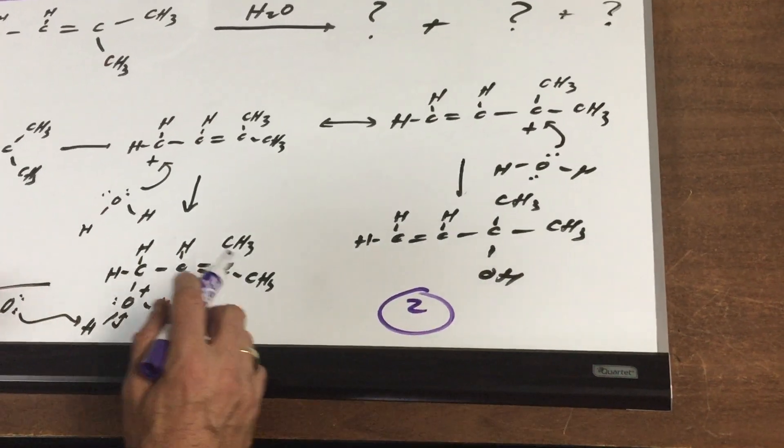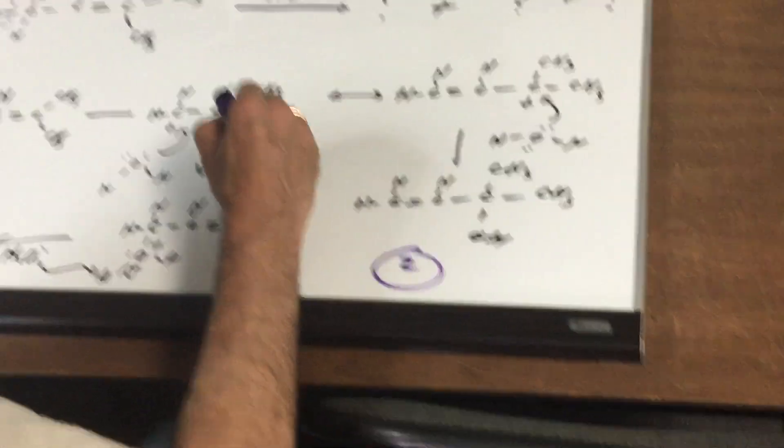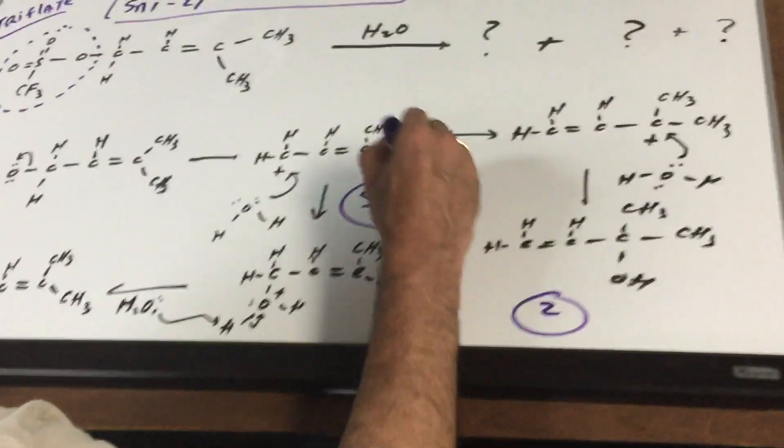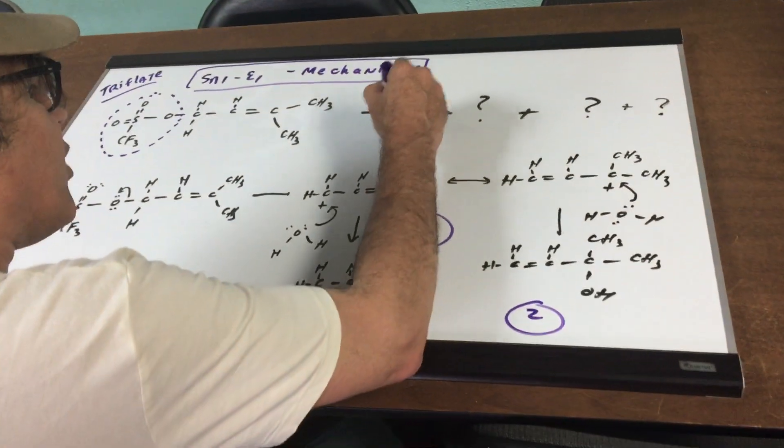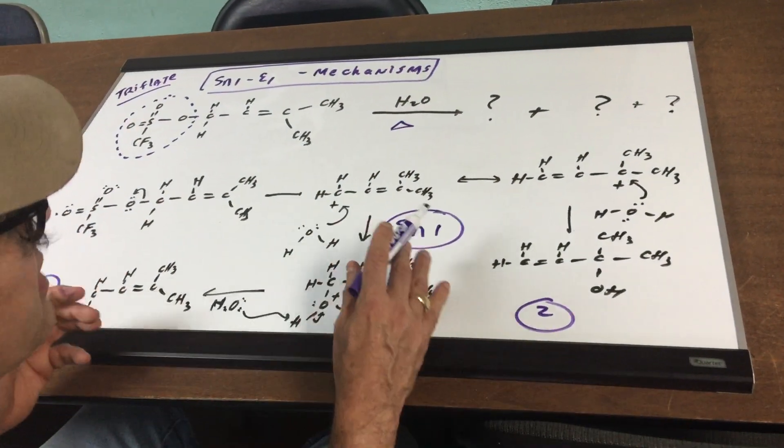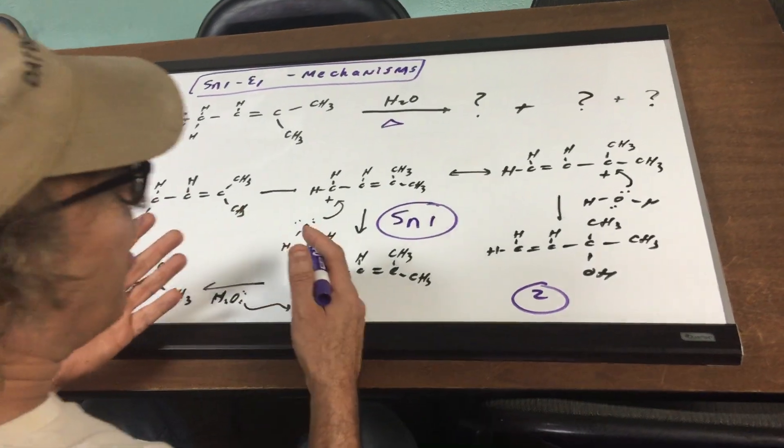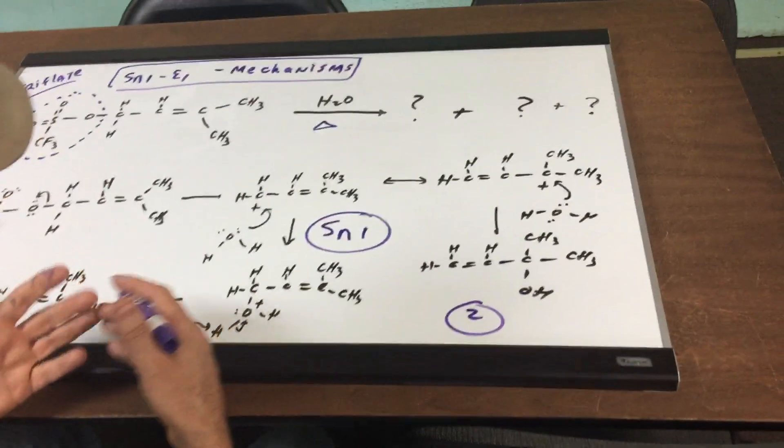Those two processes for one and two would be the SN1. Now, we all know that if you want to put a little heat under this, you would have got more of what we call the E1 mechanism.